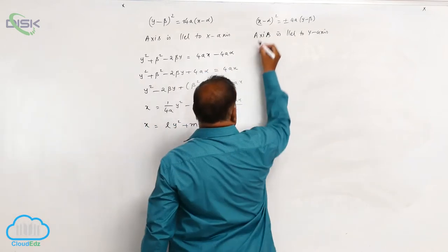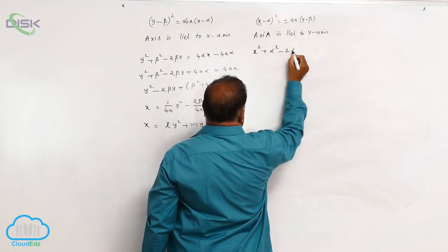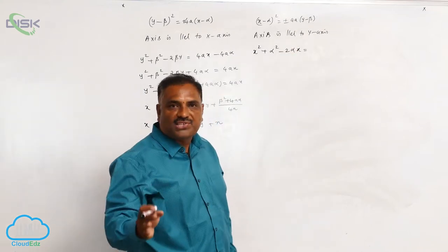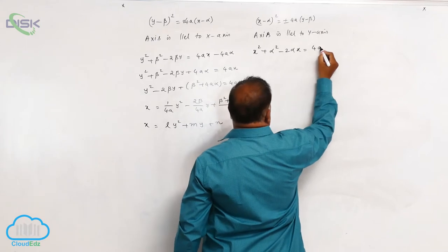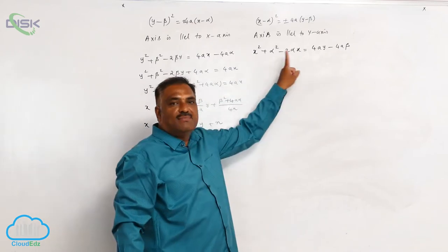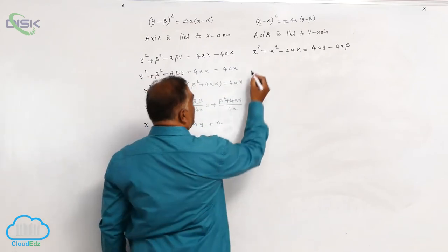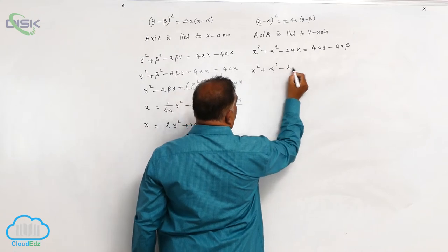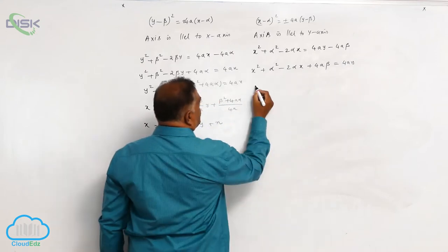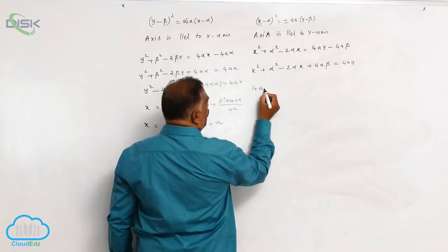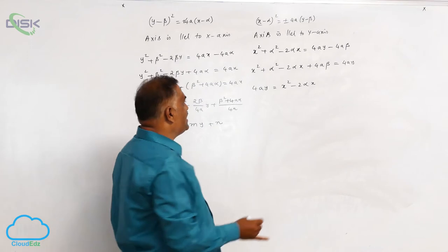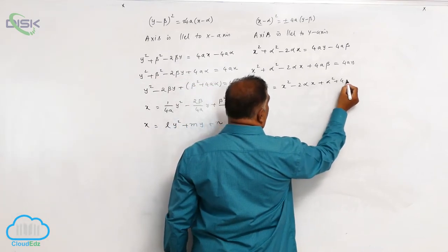In the same fashion, expanding the second equation: x² + α² - 2αx = 4ay - 4aβ. Again, let us consider the positive sign only. Now, express y in terms of x. Bringing 4aβ to the left side: x² + α² - 2αx + 4aβ = 4ay. So, write it as: 4ay = x² - 2αx + α² + 4aβ.